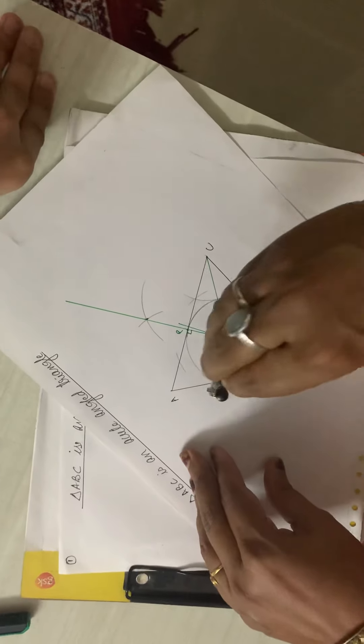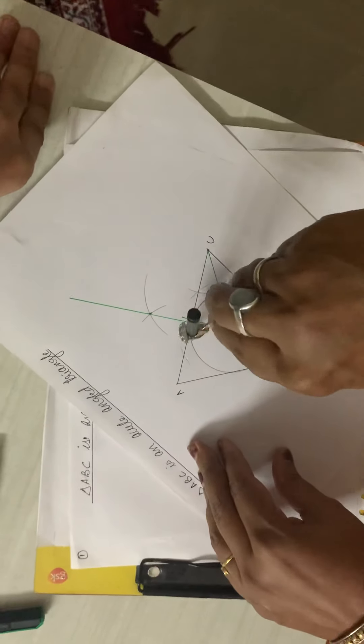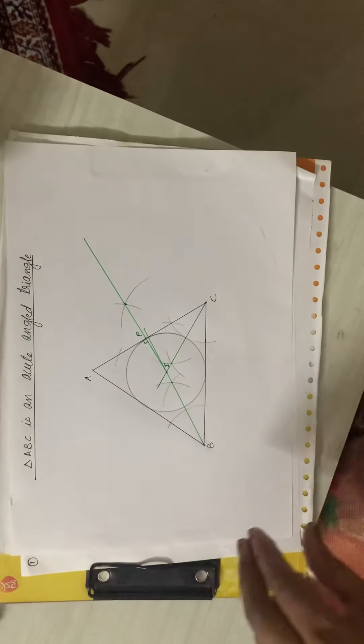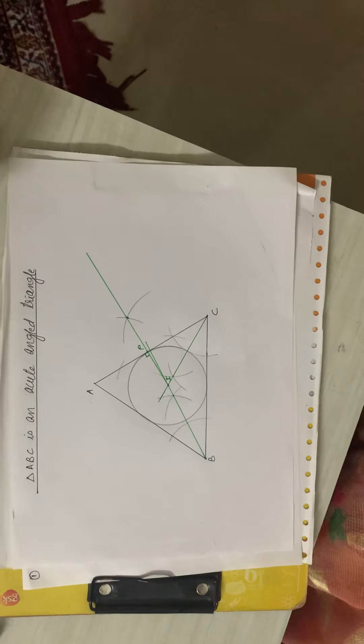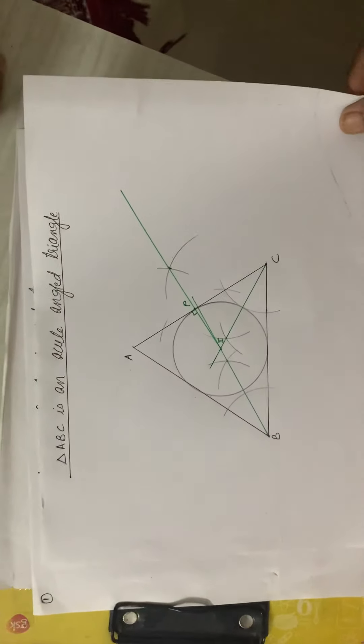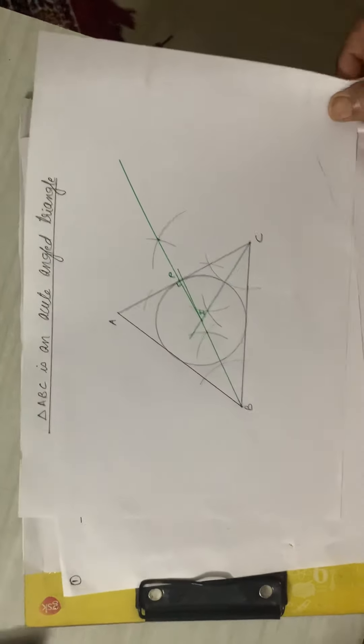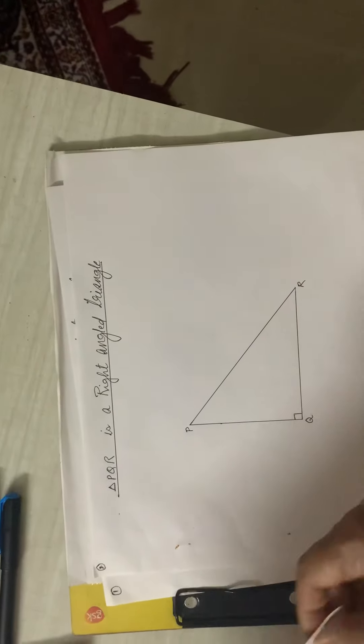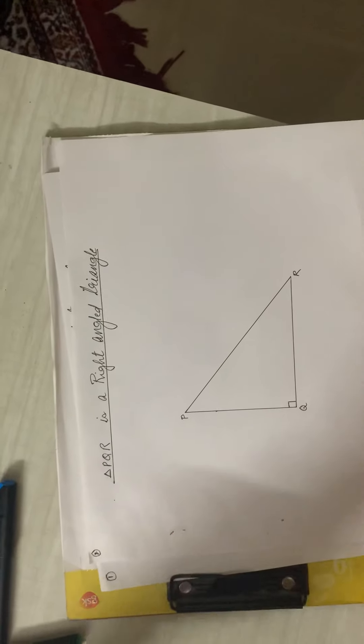So this is the in-circle of an acute-angled triangle ABC. In exactly the same manner, following the same steps, we will draw the in-circle for a right-angled triangle PQR.